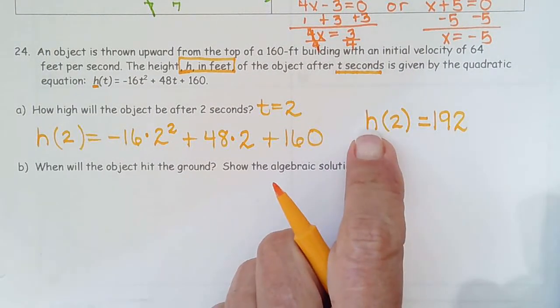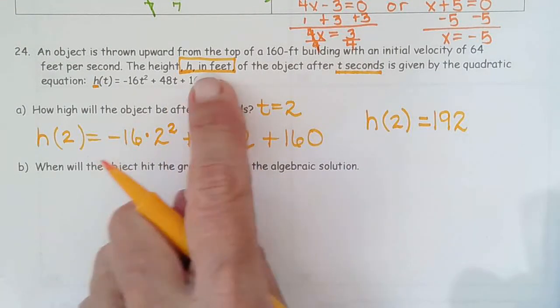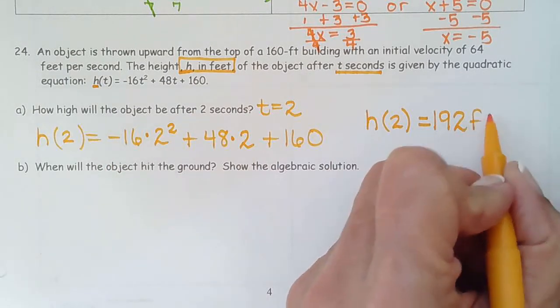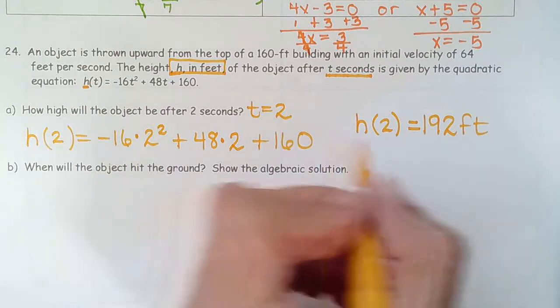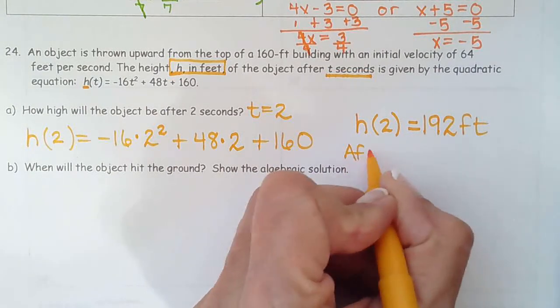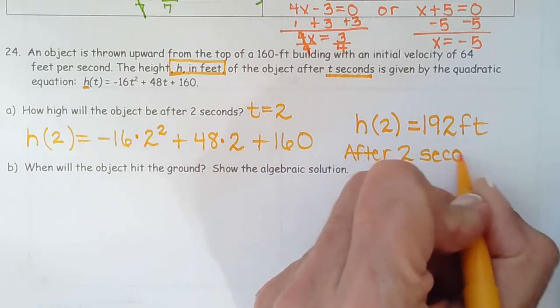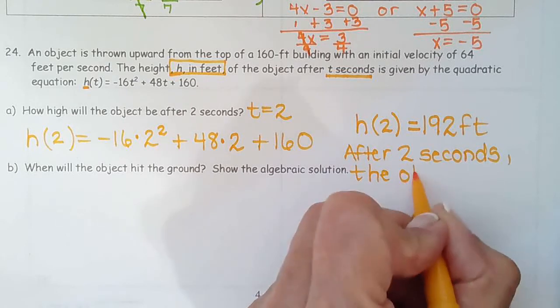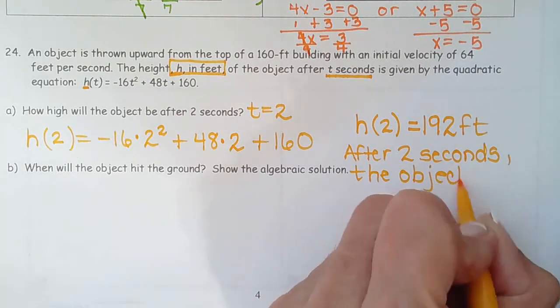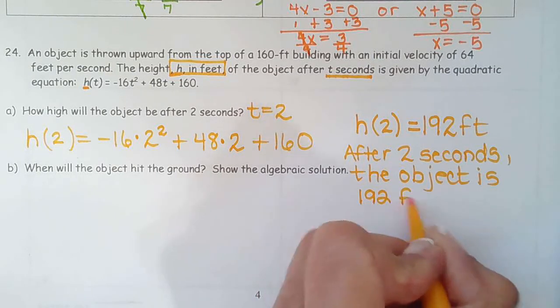So this is h. So what are we going to label it? We look up here because that's why we have different colored pens, pencils, highlighters, so we can highlight it. So 192 feet. So if they asked us to write a sentence about it, we'd say after 2 seconds, the object, you never named it, they just called it an object, is 192 feet high.